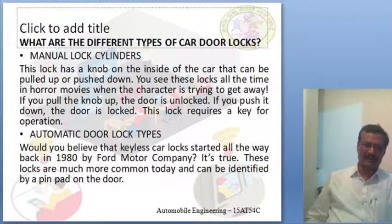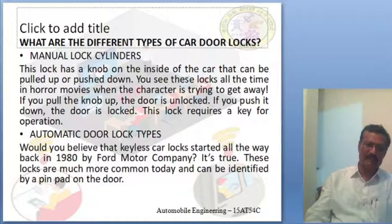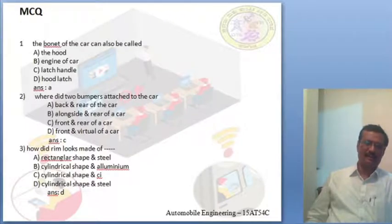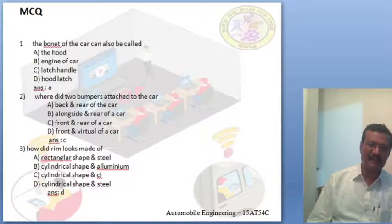The automatic door lock system is keyless. Keyless car locks started back in 1980 by Ford Motors Company. These locks are much more common today and can be identified by a pin pad on the doors. Now, a multiple choice question: the bonnet of a car can also be called — the options are: the hood, engine of car, latch handle, or foot latch. The correct answer is A, the hood.